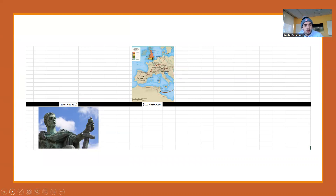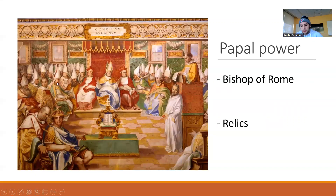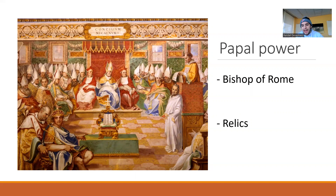Moving on to Pope Gregory I in the late 5th and 6th centuries. This is the first occurrence of real papal power, and Pope Gregory I also tried to rebuild the Roman Empire. Before the time of Gregory I, the Bishop of Rome did not have any power over other bishops. After Gregory I became the Bishop of Rome, he made the Bishop of Rome supreme over all other bishops. Gregory did this by sending out missionaries, setting up a militia, passing legal reform, intervening in affairs of rival churches, and using the abundance of relics situated around Rome — all to increase the papal power of the Bishop of Rome.